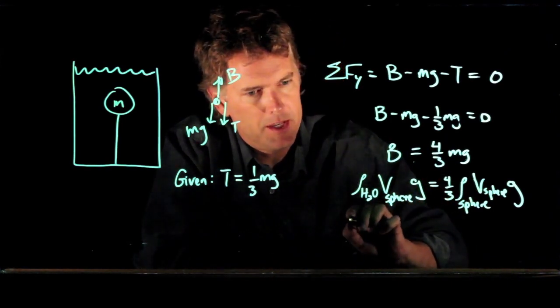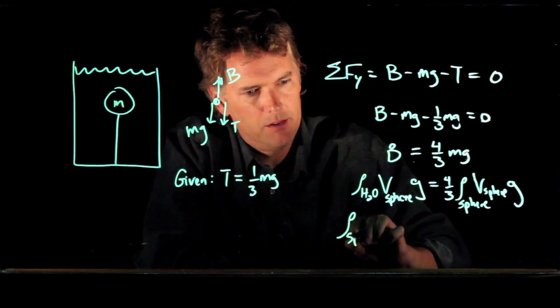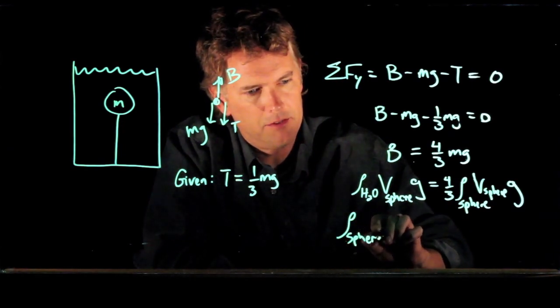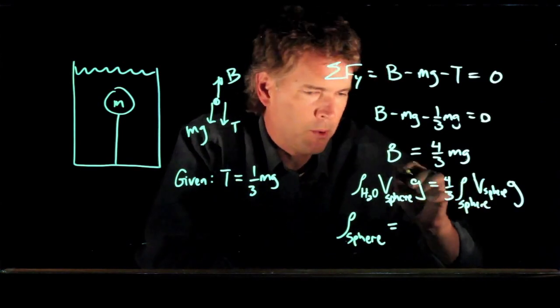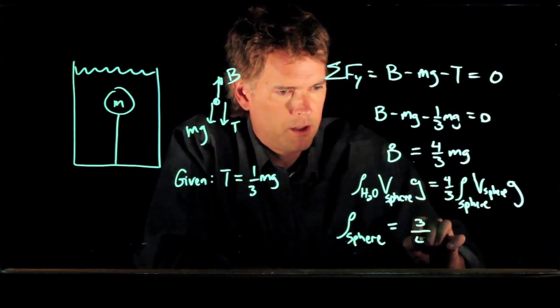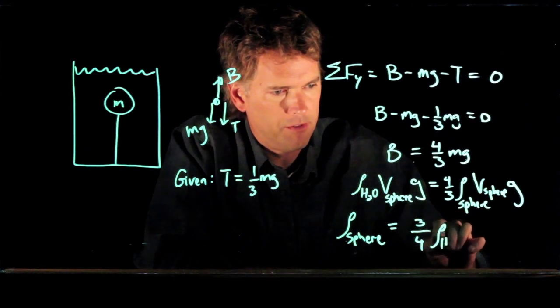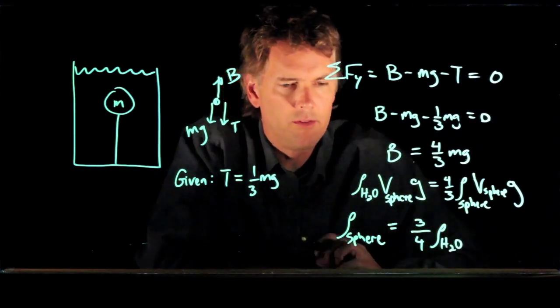And we can solve this thing for the density of the material that is in that sphere. We've got a four-thirds over here, so if we multiply across by three-fourths, we get three-fourths the density of water.